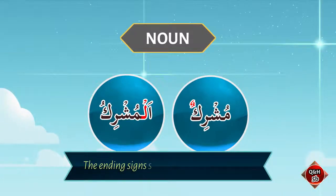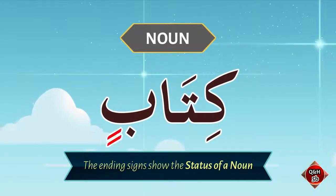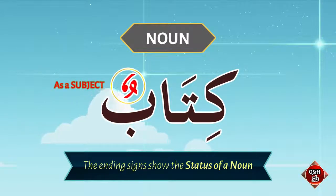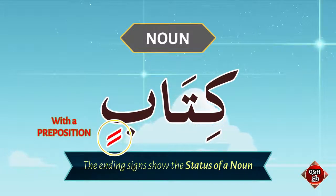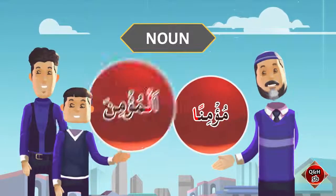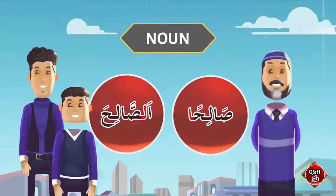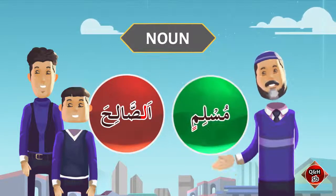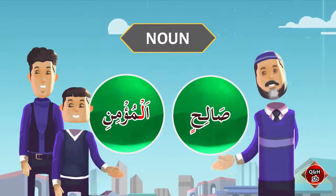The ending signs show the status of a noun. For example, kitabun, kitaban, or kitabin — depending on whether kitab is used as a subject, an object, or with a preposition. You will learn more about this later on. But here: can you give me the noun with al for 'musliman'? — Al muslima. 'Mu'minan'? — Al mu'minan. 'Salihin'? — Al salihah. For the last case, can you give me the noun with al? 'Muslimin'? — Al muslimi. 'Mu'minin'? — Al mu'mini. 'Salihin'? — Al salihin.